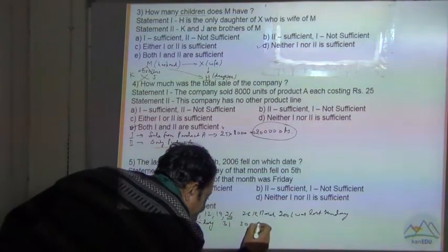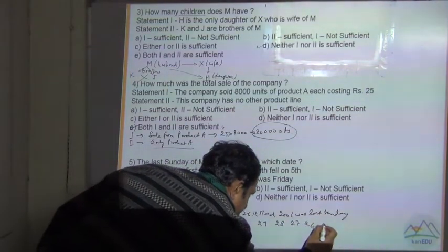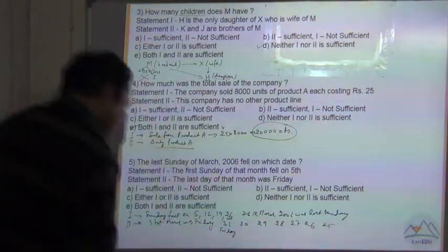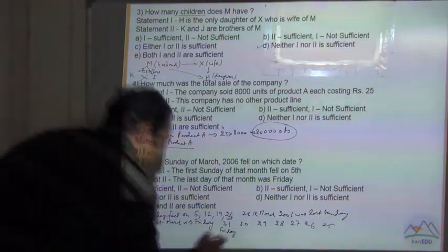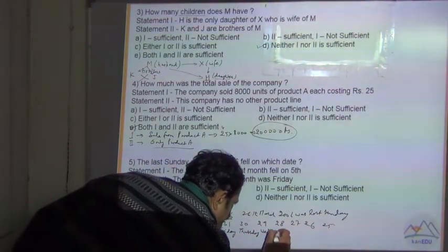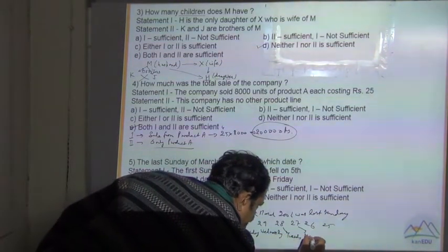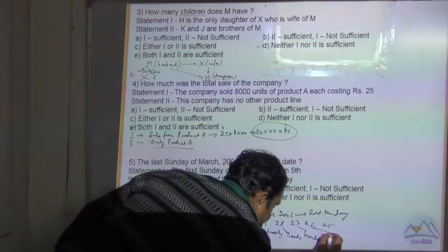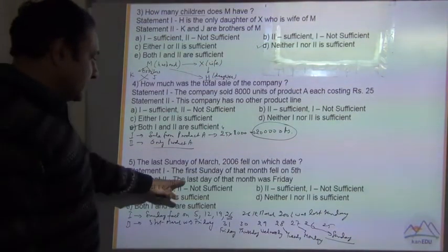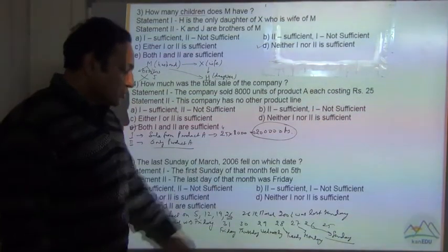31st, 30, 29, 28, 27, 26, 25. So Friday, then Thursday, Wednesday, Tuesday, Monday, and 26th was the Sunday. So this was the last Sunday. From the second statement also we can find out what was the last Sunday of March 2006.